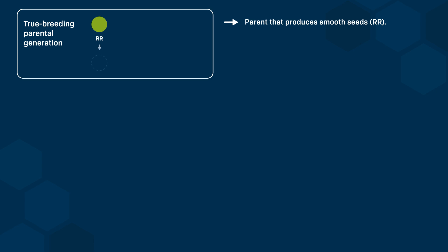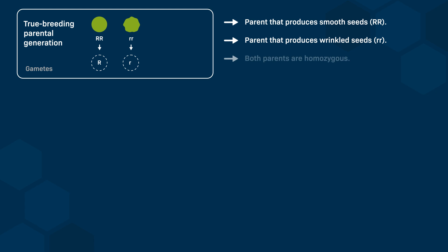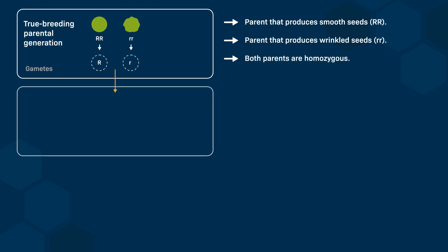Consequently, this organism would generate gametes that carry the uppercase R allele. The other true breeding parent also had two identical alleles, but these were different from the other parent — each allele is denoted as a lowercase r. This parent would produce gametes that carry the lowercase r allele. We refer to the state of having two identical alleles as homozygous. Through cross-pollination, Mendel generated the first filial generation, known as the F1 generation.